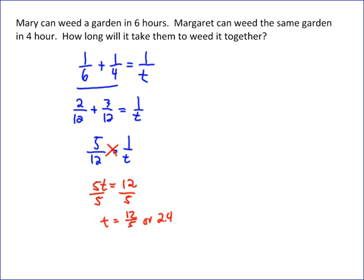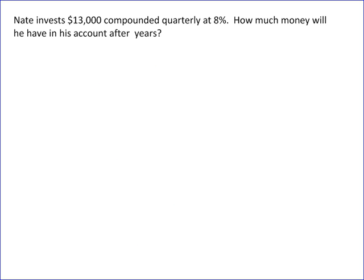So in 12 fifths hours, or 2.4 hours, or 2 and 2 fifths hours, they would be done weeding that garden together. Okay, and then the next problem we're looking at is a compound interest problem, and this says Nate invests $13,000 compounded quarterly at eight percent.